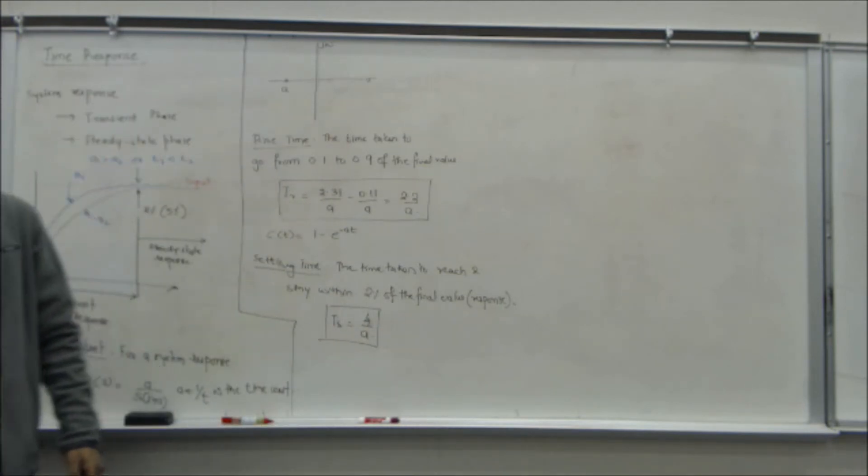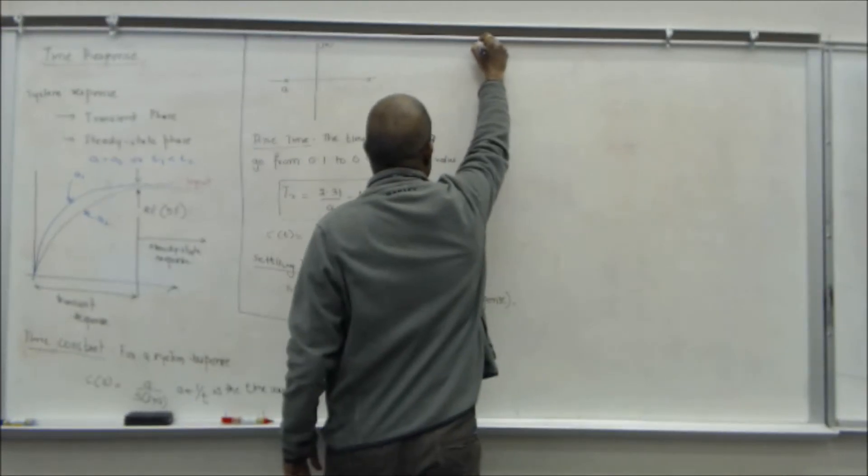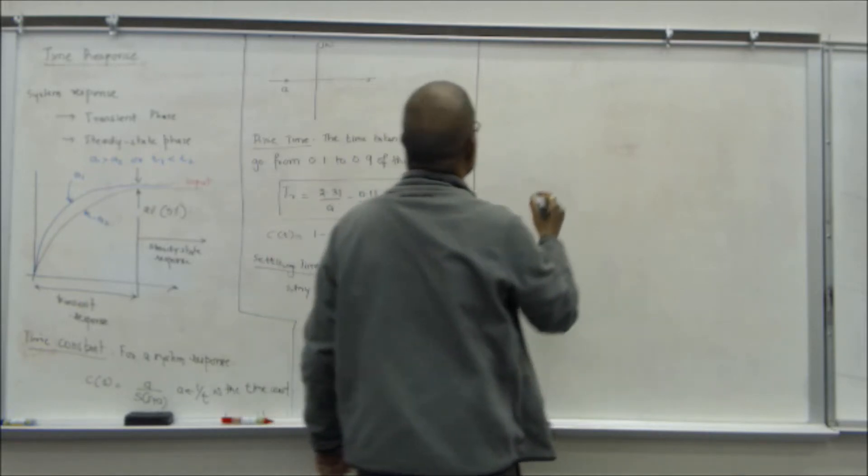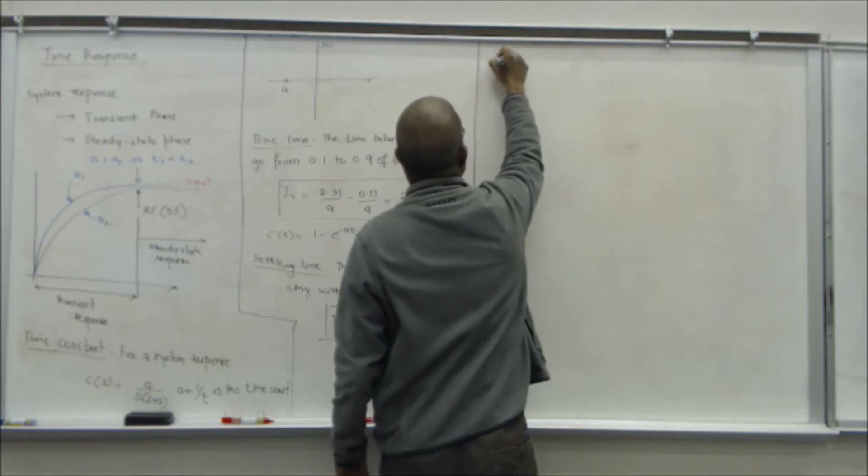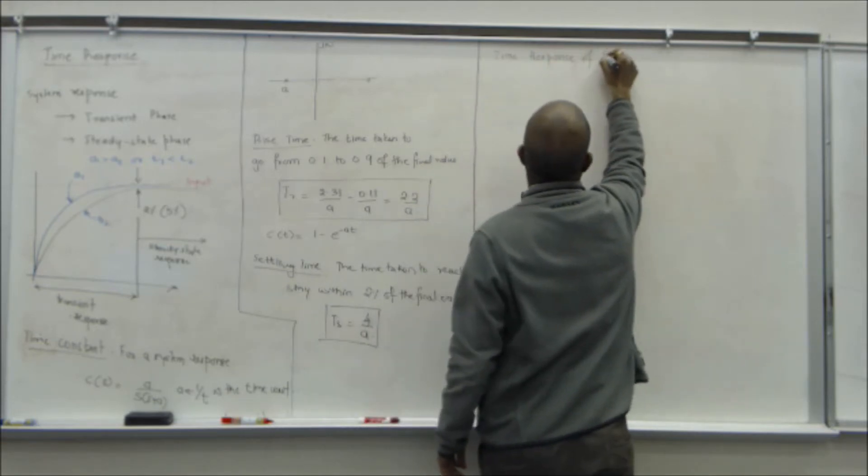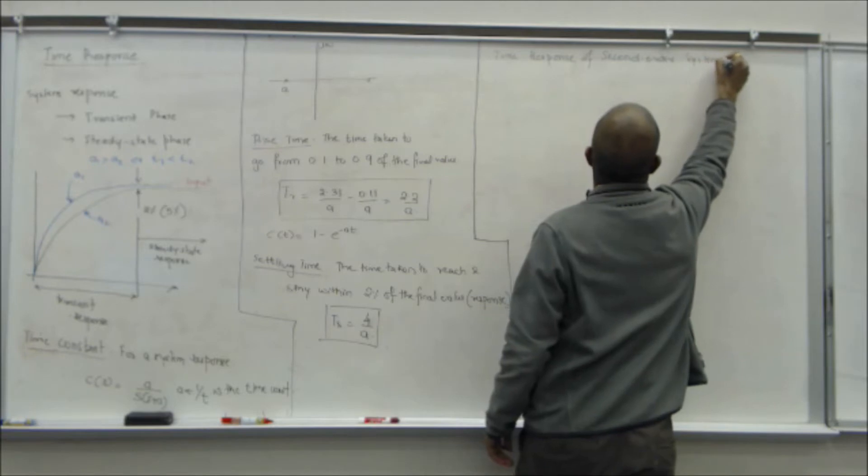For example, if you are trying to reach a speed of 70 miles per hour, 80 miles per hour, a first order system can never overshoot that. The response will always be less than that. Only a second order system can go to 80 and come back to 70. Now we start discussing time response of second order systems.